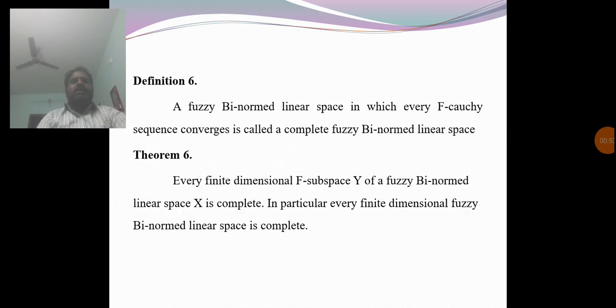Next, we discuss complete fuzzy bi-normed linear space. Definition 6: A fuzzy bi-normed linear space in which every F-Cauchy sequence converges is called a complete fuzzy bi-normed linear space.